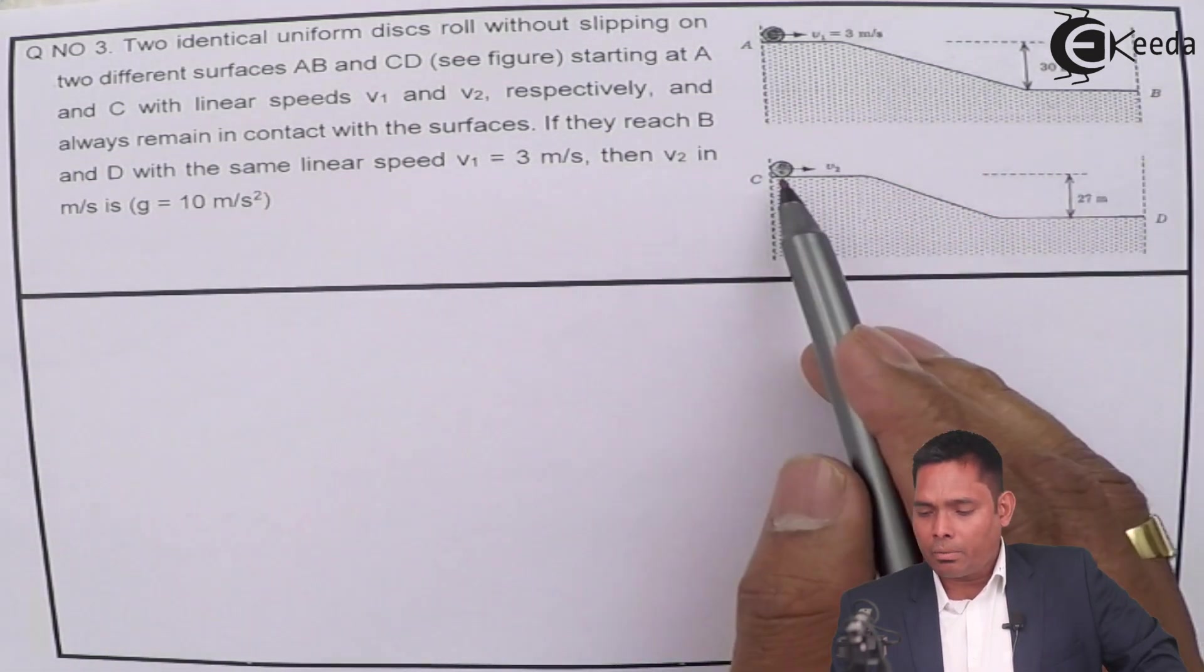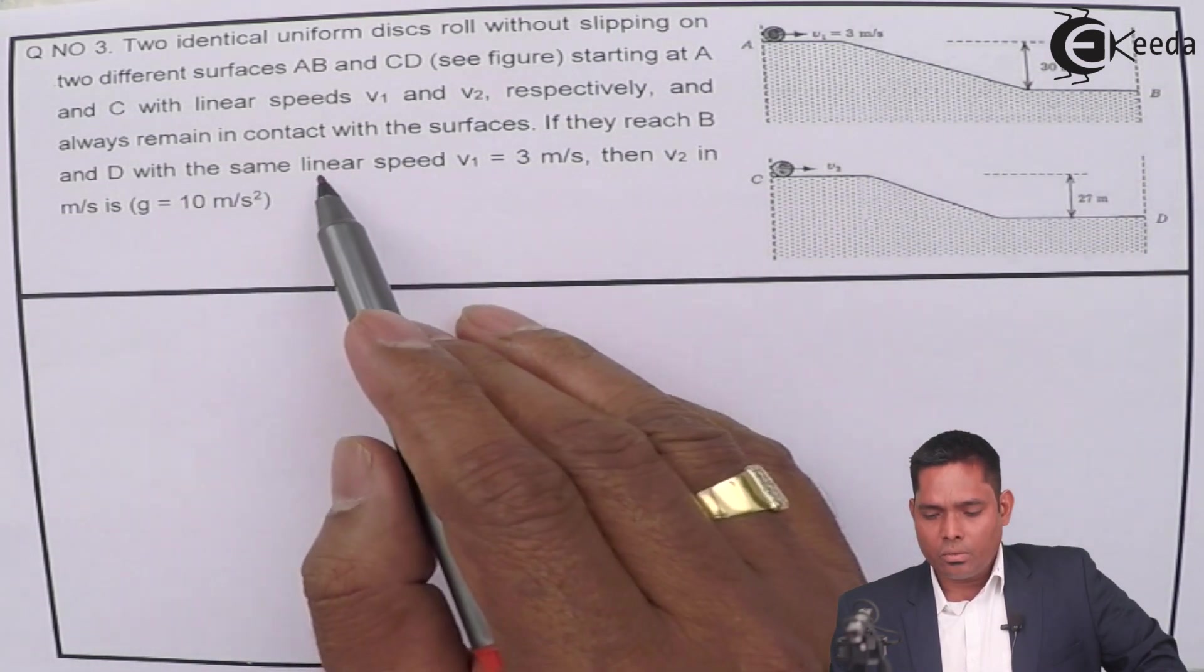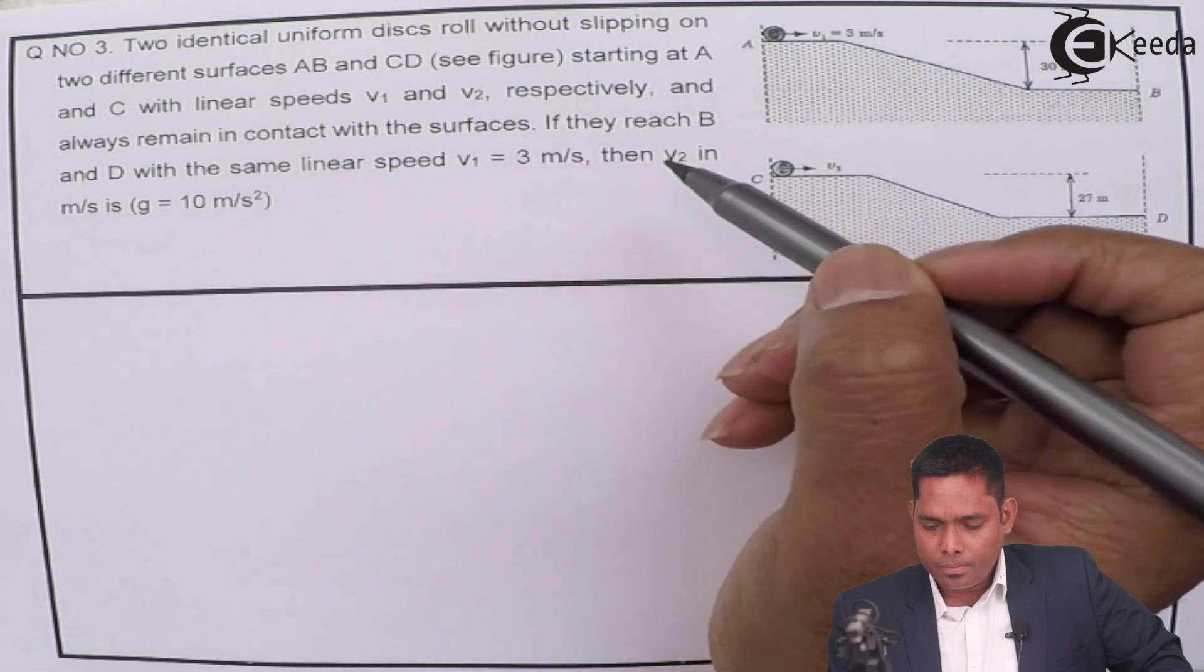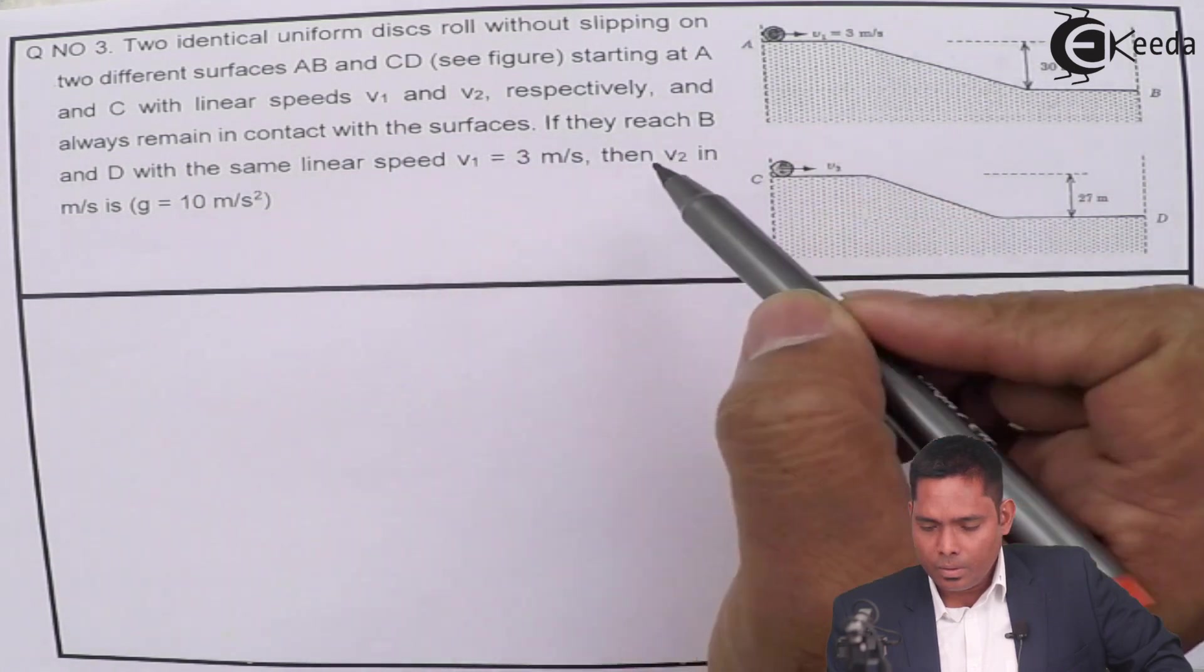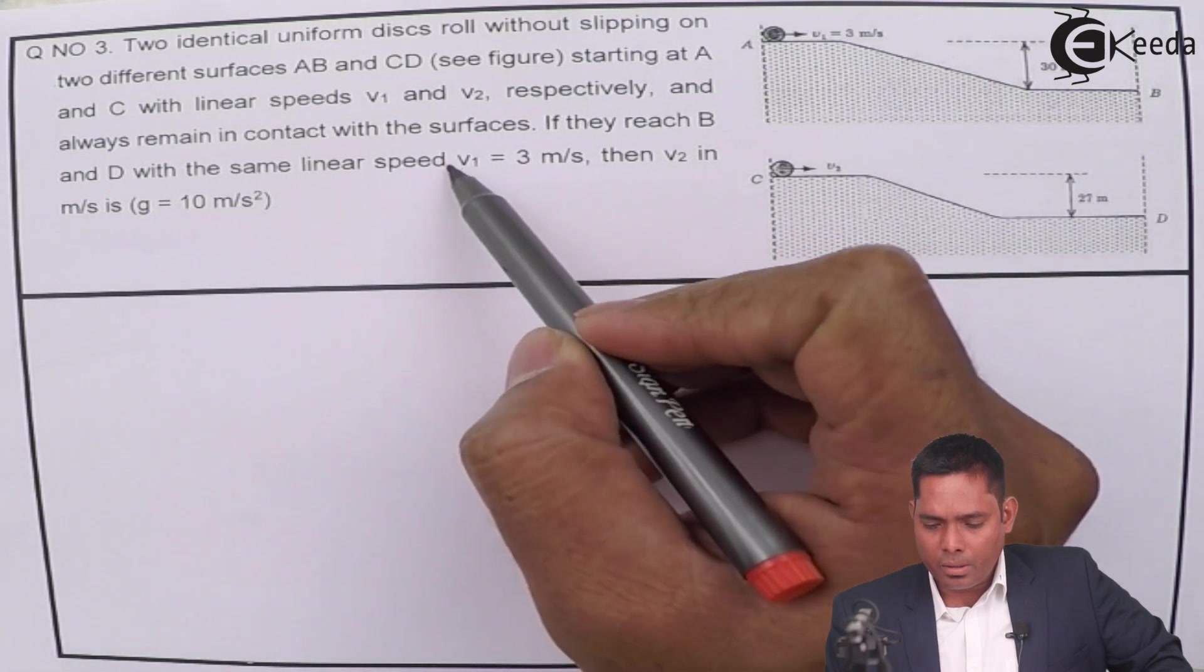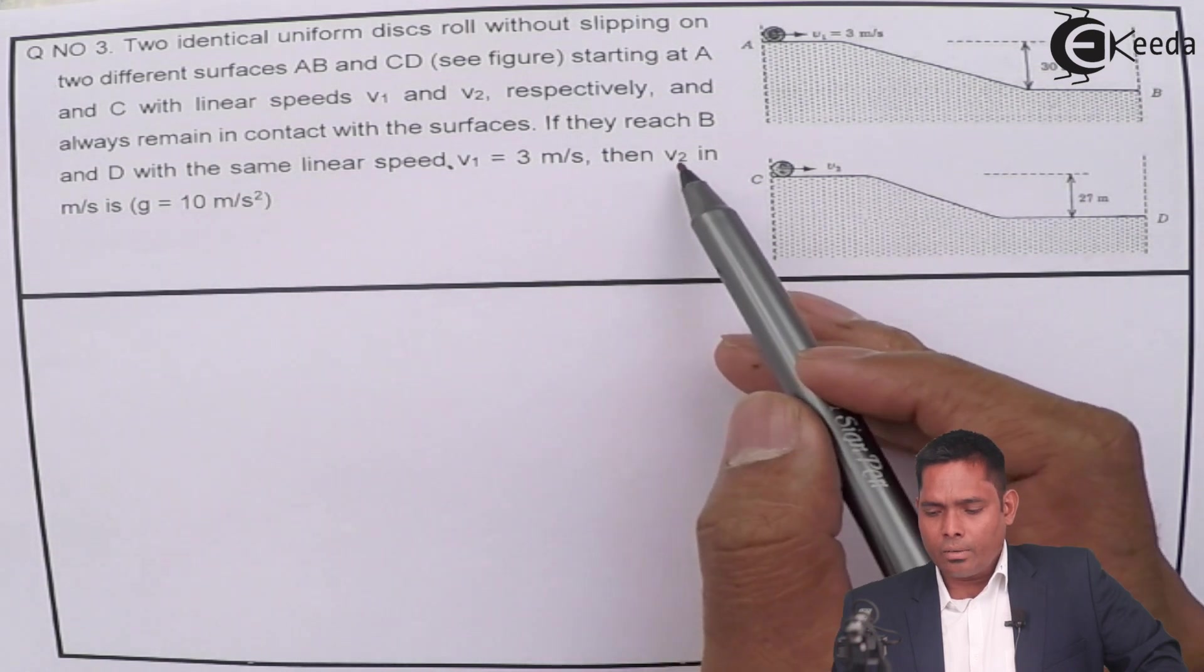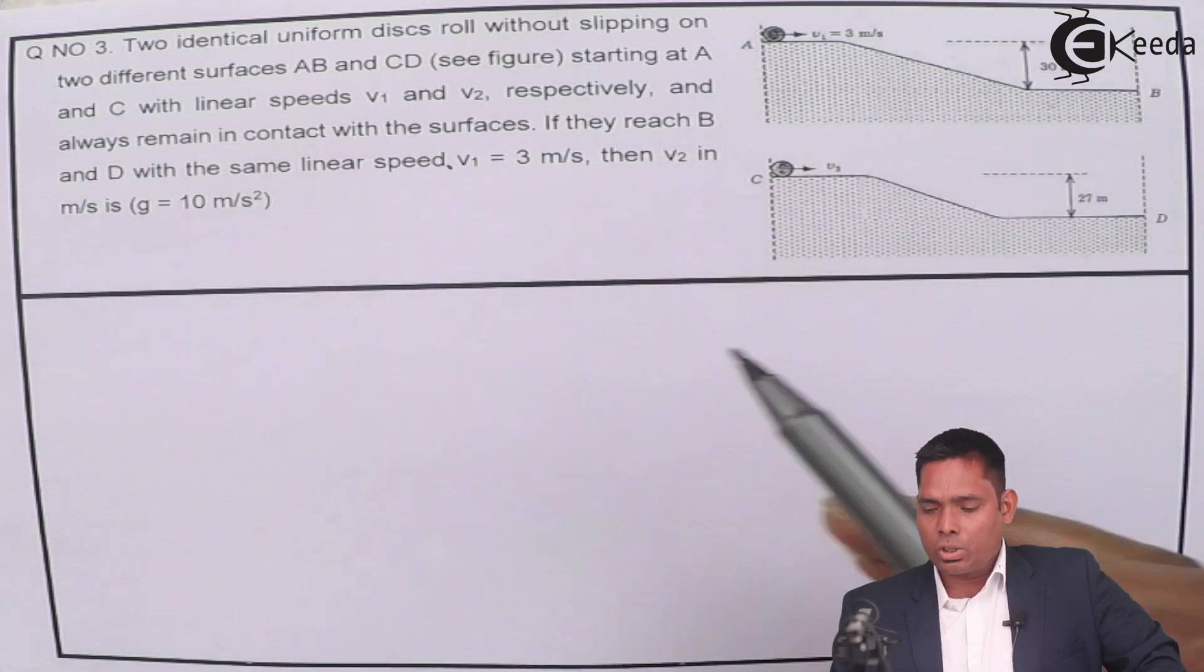If they reach B and D, this one will reach B and this one will reach D with the same linear velocity, same speed. But this is not V1, the same speed. V2 is how much.